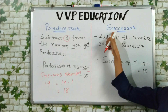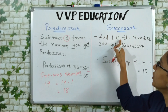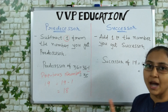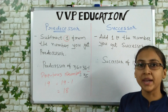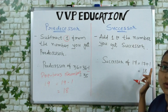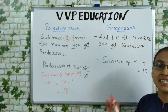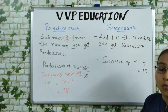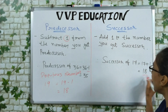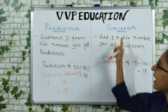Now what is successor? In successor, we have to add 1 to the number to get the successor. So successor of 17 is equal to 17 plus 1, which is 18. So the successor of 17 is 18 — that is, the number that comes after 17 on the number line.